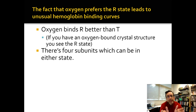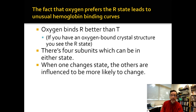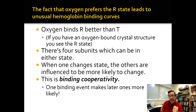In between, because you have four subunits that can be in either state, when one changes state the others are influenced to be more likely to change. When you have some oxygen, it influences the others to be in the more oxygen-binding form. The more oxygen you have, the more R you have. And the more R you have, the more oxygen you can bind. That's why the curve gets so steep. This is what we call binding cooperativity — when you have one event that makes a second event more likely.